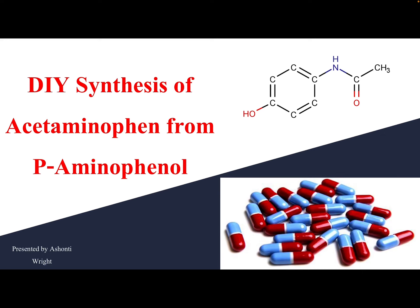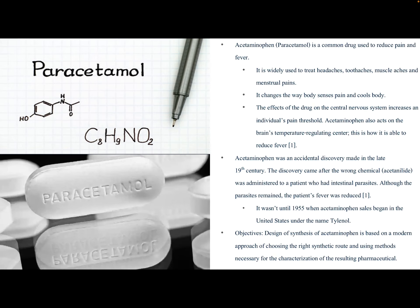Another name for acetaminophen is paracetamol. It's a common drug used to reduce pain and fever — we've all probably taken it for headaches, toothaches, muscle aches, and menstrual pains. It changes the way the body senses pain and cools the body. The effects on the central nervous system increase an individual's pain threshold, and acetaminophen also acts on the brain's temperature regulating center, which is how it reduces fever.